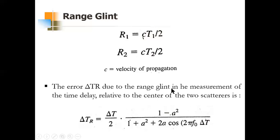If individual scatterers of the target can be resolved in range, then both angle and range glint will not be a problem. Tracking in range is generally more accurate than tracking in angle. Any effects of range glint are of less concern than errors in angle. That concludes the topic of range glint, and with it, the tracking in range module.